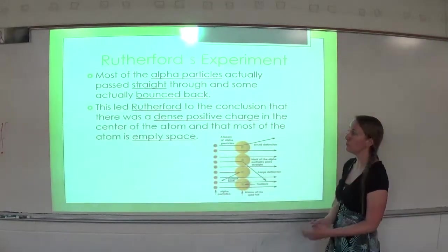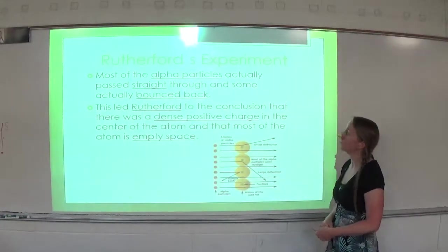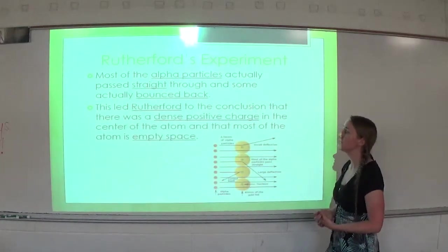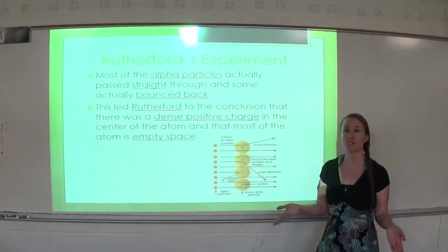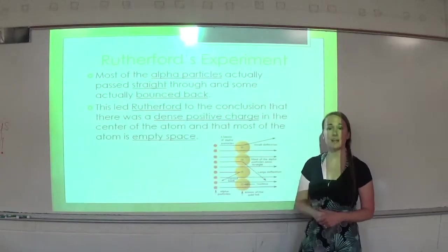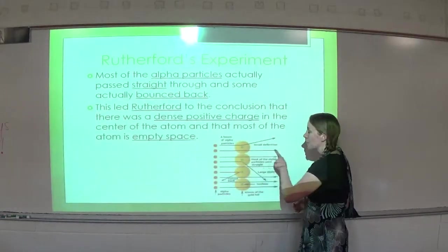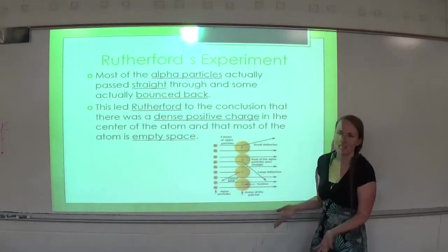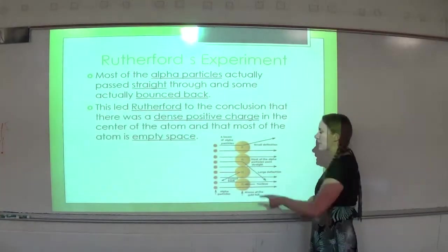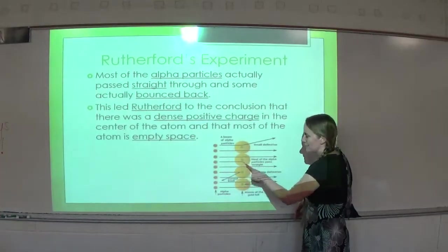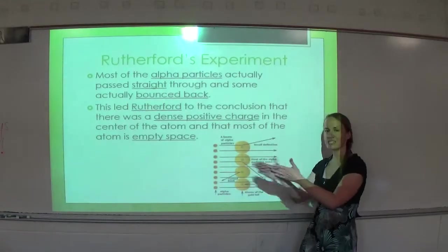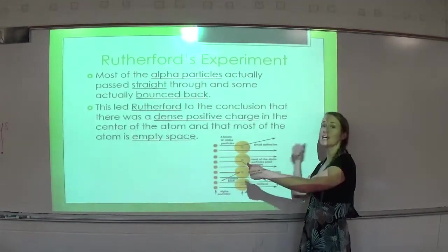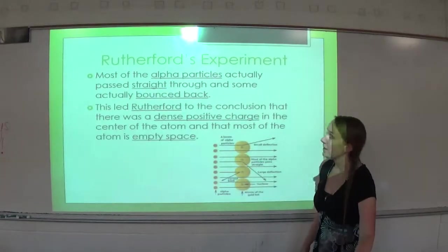This led Rutherford to the conclusion that there was a dense positive charge in the center of the atom — which we know as the nucleus — and that most of the atom is empty space. The particles that passed straight through just passed through the electron cloud with nothing to hit. The ones that bent or deflected skimmed the side of the nucleus, and the ones that hit the nucleus dead on were the ones that bounced back.